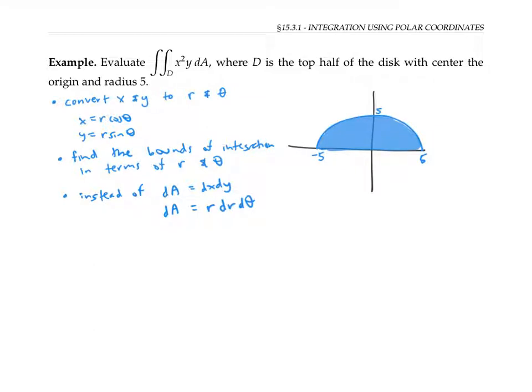You may be wondering, why do we have this extra factor of r here? We didn't have an extra factor of x or y when we used Cartesian coordinates. I'll give an informal justification here. For a more formal justification, please see the next video.